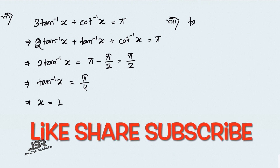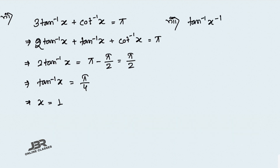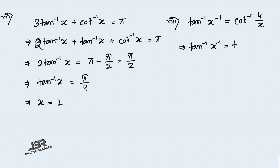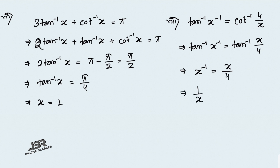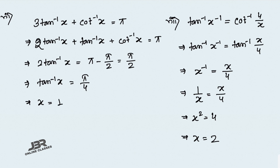Problem 8: tan inverse(1/x) equals cot inverse(4/x). Since cot inverse can be written as tan inverse of its reciprocal, cot inverse(4/x) equals tan inverse(x/4). So 1/x equals x/4, giving x² equals 4, and x equals plus or minus 2. Since x must be greater than 0, x equals 2.